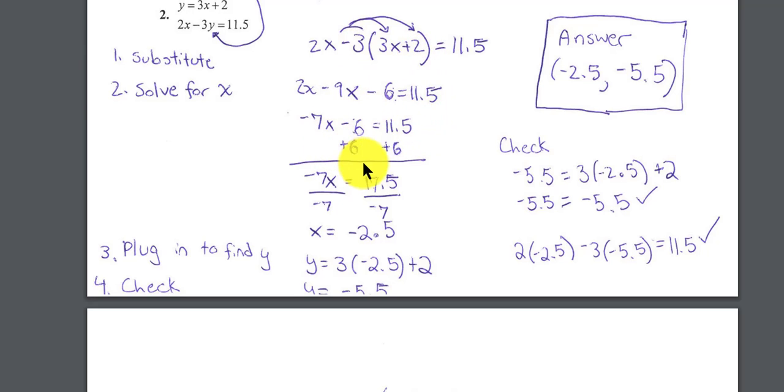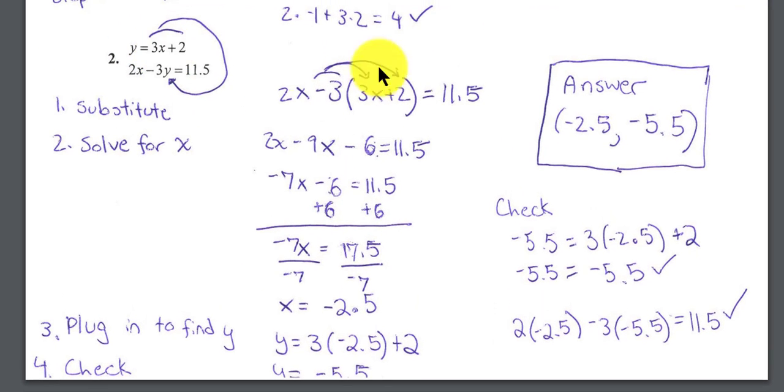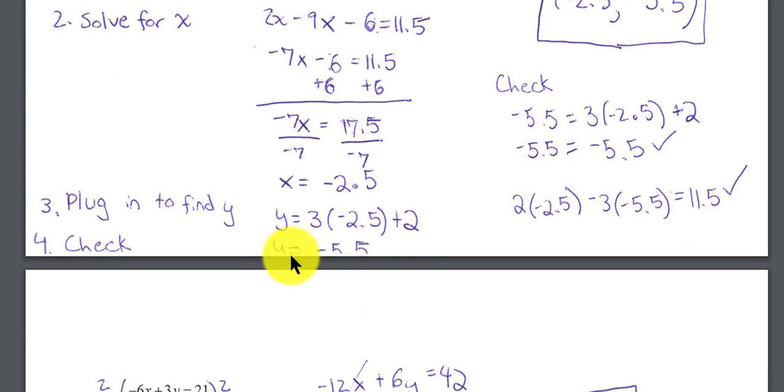And when you clean up the math, don't be afraid of the decimal point or fractions. We clean up the algebra, and you end up with x equals negative 2.5. So the x-coordinate is negative 2.5. I replace the x with negative 2.5. So if I'm trying to find y, we know y equals 3 times x, but I already told you x is negative 2.5. So we can say y equals 3 times negative 2.5 plus 2, and you end up with y equals negative 5.5.